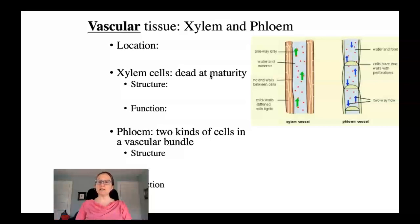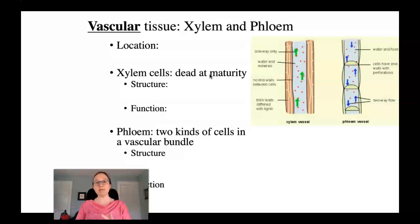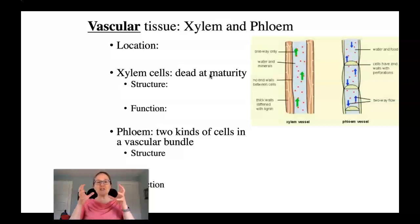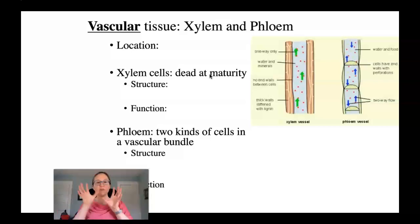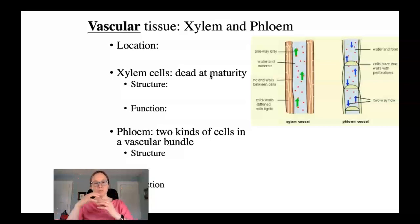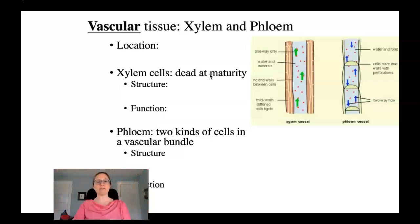Xylem cells are really interesting because they are actually dead in order to be useful. Xylem cells are dead at maturity, meaning they have thick secondary cell walls and usually have pits or perforations at the end. So they're tubular or cylindrical cells with holes at either end, kind of like drinking straws or pieces of macaroni. Their function is to move water from the roots up through the stem and out through the leaves.